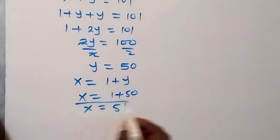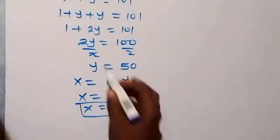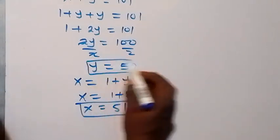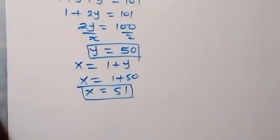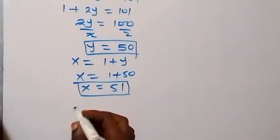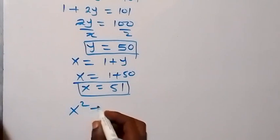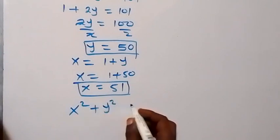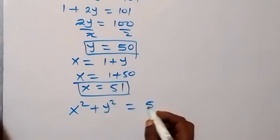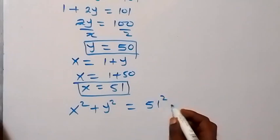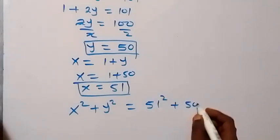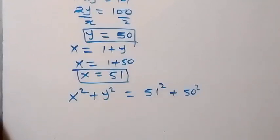So x = 51 and y = 50. Now we want to find x² + y². So x² + y² = 51² + 50². And 51² can be written as (50 + 1)²